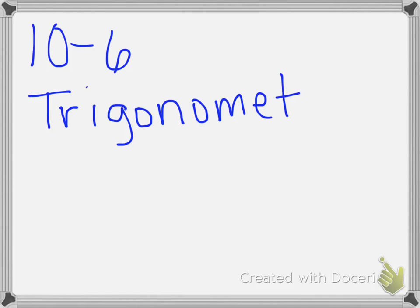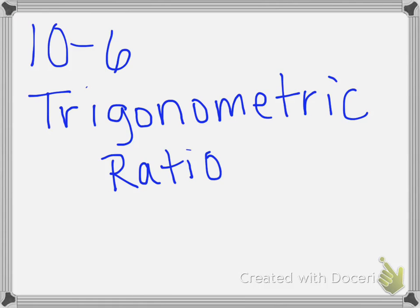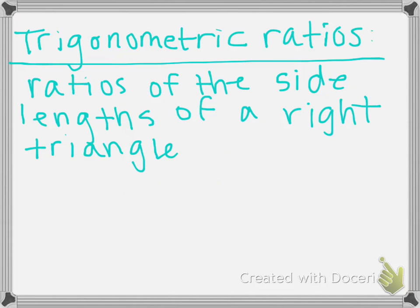10-6 Trigonometric Ratios. A trigonometric ratio is a ratio of the side lengths of a right triangle. You may have heard of these before. Sine, cosine, and tangent are what we are going to be looking at.